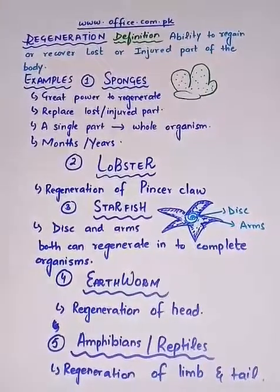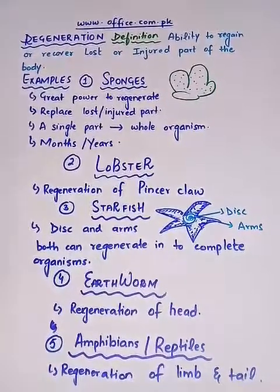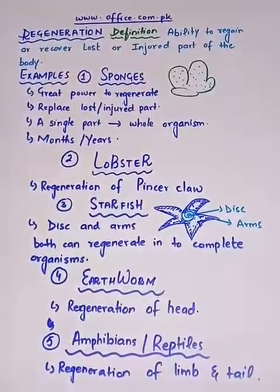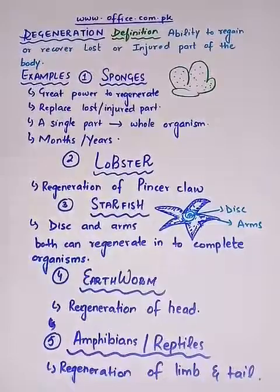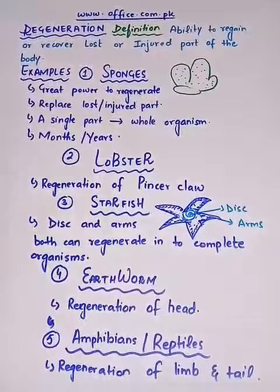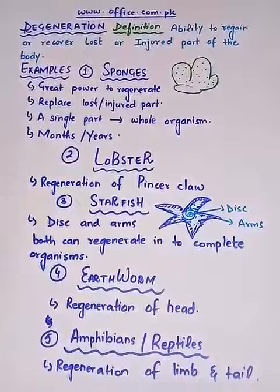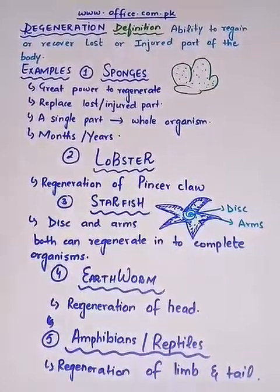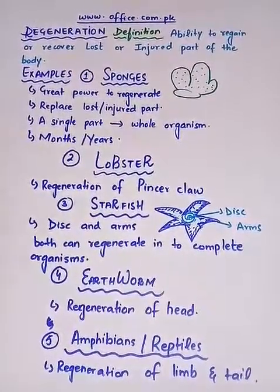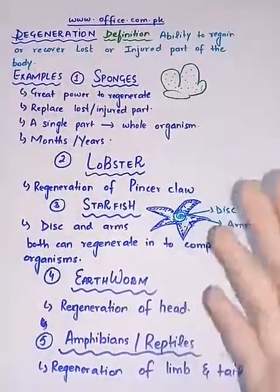First of all, we have the example of sponges. Sponges are the simplest organisms and they have the simplest organization of cells. They have the greatest power to regenerate — even if you take a small piece of a sponge, it will become a complete new whole organism. However, this process is quite slow and it will take from months to years, but ultimately the organism will be fully developed from just a single small part.